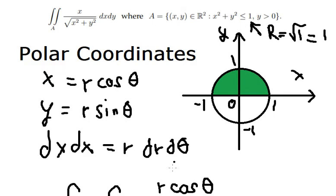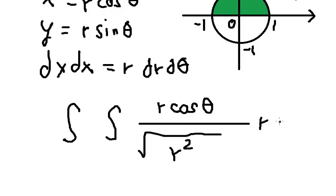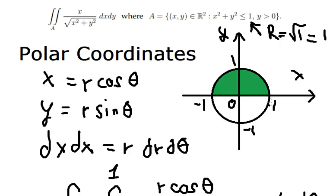dxdy we change for this one, r dr dθ. The radius is from 0 to number 1, and dθ is from number 0 to π because they go this way in here.